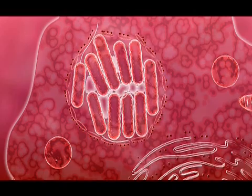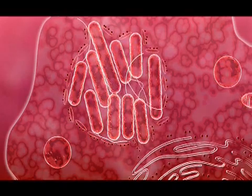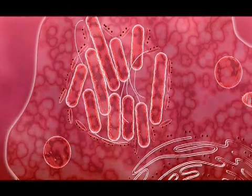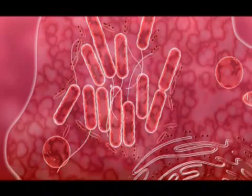Once Legionella is inside an ER vesicle, it is hidden from lysosomes. Now that Legionella cannot be destroyed by lysosomal attack, it multiplies freely within the ER-like phagosome.